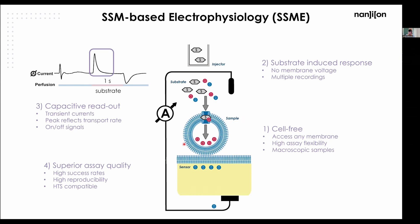Here in this picture you see vesicles absorbed to the sensor — actually it's millions of them — which enables high signal amplification compared to patch clamp. The second point is that we are measuring substrate-induced responses. Our devices are essentially pipetting robots that inject substrates to the sensor, and that substrate gradient stimulates the transport activity. This happens at zero millivolt — there is no voltage clamp — and you can measure multiple recordings sequentially because in between recordings the substrate is washed off and initial conditions are restored.